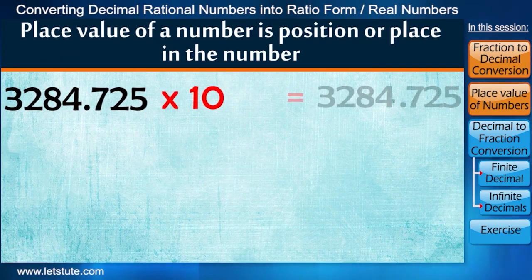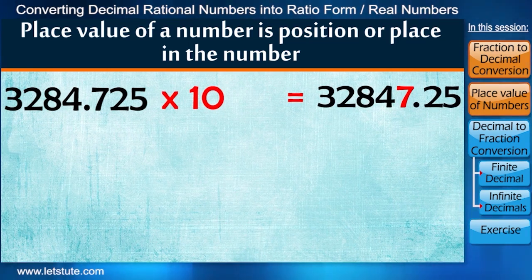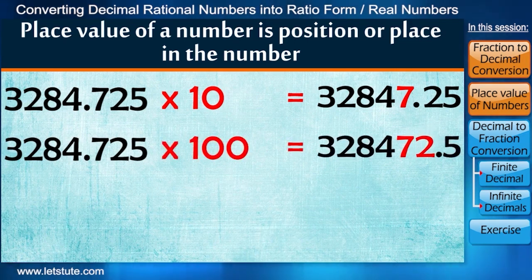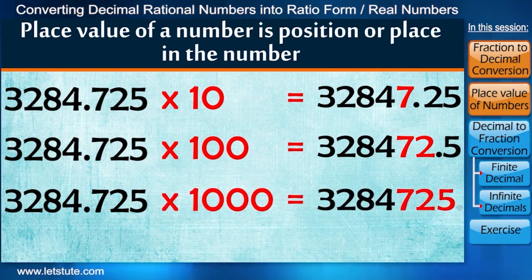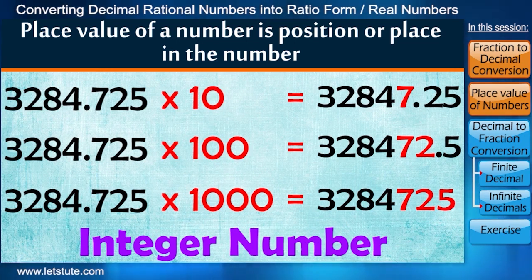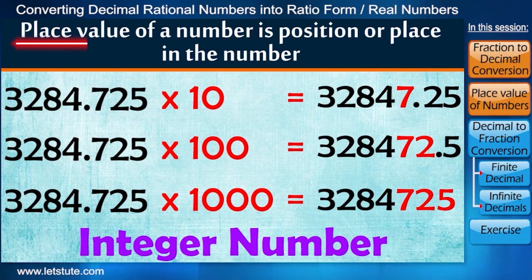Now if we multiply by 10, then 1 digit will shift to the left of decimal. If we multiply by 100, then 2 digits will shift to the left. And when we multiply by 1000, then all the 3 digits will shift to the left, and we will get an integer number. I hope we have understood this basic concept of place value of numbers.